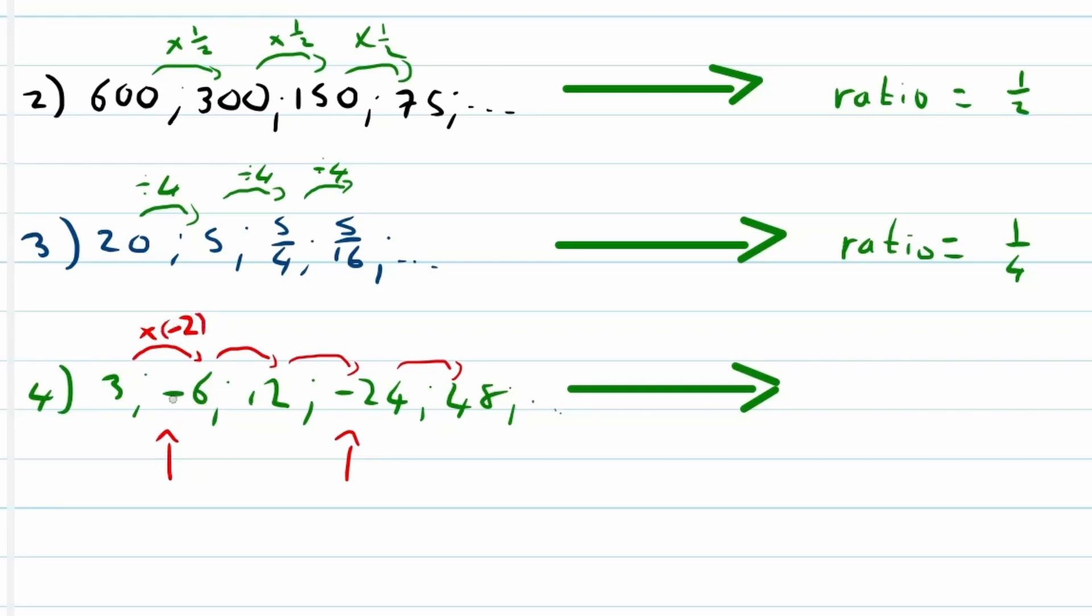But now if we say negative 6 times negative 2, remember a negative times a negative is a positive and 2 times 6 is 12. So that will give us a positive 12. But now if we say 12 times negative 2, this will now give us negative 24.